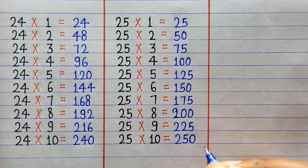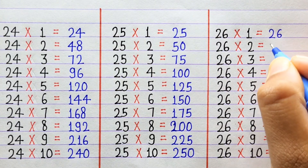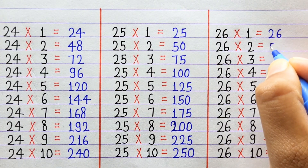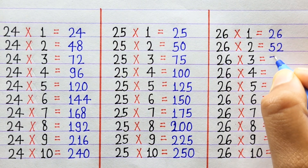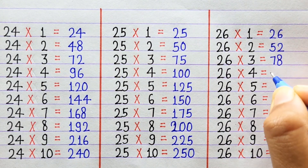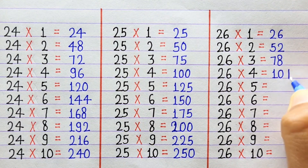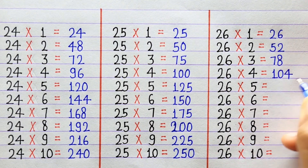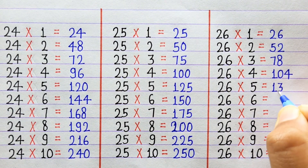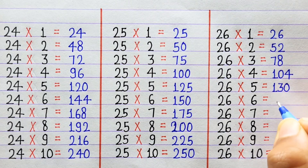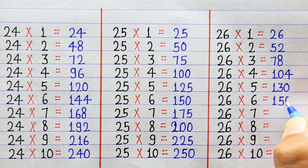26×1=26, 26×2=52, 26×3=78, 26×4=104, 26×5=130, 26×6=156.